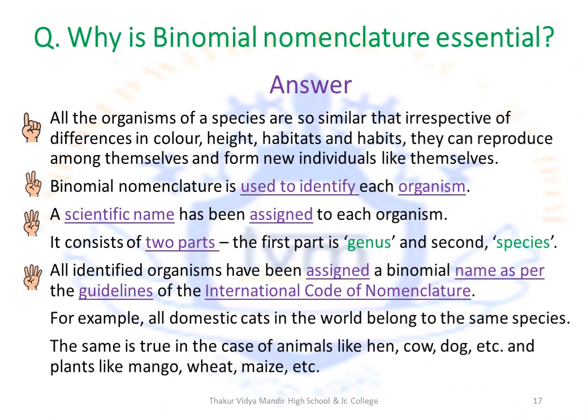Why is binomial nomenclature essential? All organisms of a species are so similar that irrespective of differences in color, height, habitat and habits, they can reproduce among themselves and form new individuals like themselves. Binomial nomenclature is used to identify each organism. A scientific name has been assigned to each organism as per the hierarchical classification system. Binomial nomenclature — the 'bi' stands for two — consists of two parts: the first part is genus and the second is species. All identified organisms have been assigned a binomial name as per the guidelines of the international code of nomenclature.